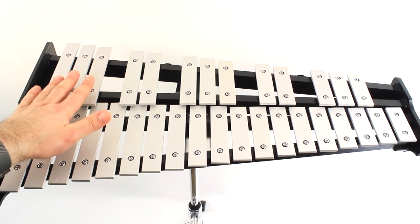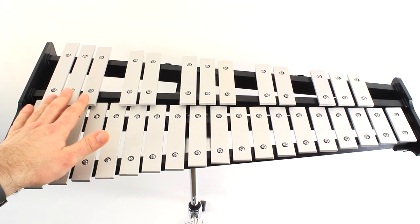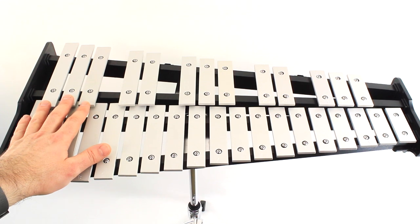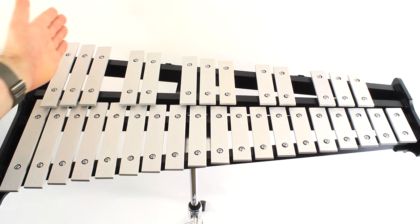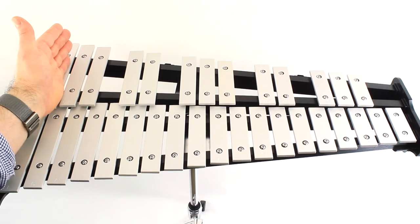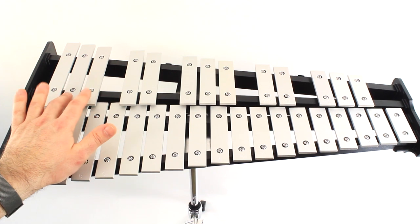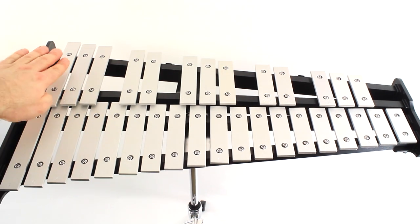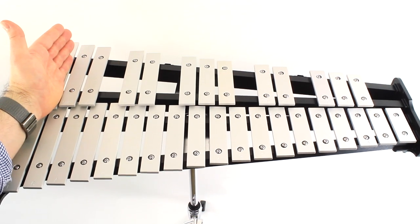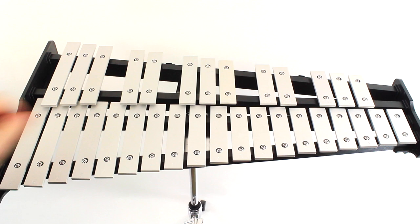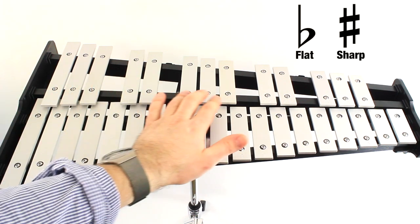If your bell kit at home doesn't look just like mine here at the bottom, that's okay. Some bell kits, depending on what company makes them, will stop at this note. And so you might only have two notes here at the bottom in the upper row. That's okay, they just wanted to make their bell kit a little shorter. We'll learn more about these flat and sharp notes a little bit later.